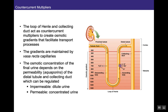If vasopressin is not present in the circulatory system, there would be no aquaporin channels inserted, and water would be impermeable to the distal tubule and collecting duct. This would force water to stay in the nephron, and the body would produce a very dilute, large-volume urine. However, if vasopressin is present, the collecting duct becomes permeable to water and allows for water reabsorption and the production of very concentrated urine.